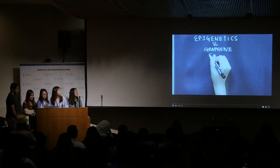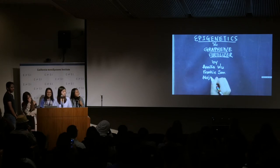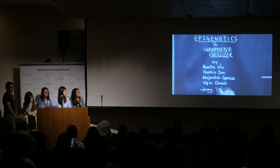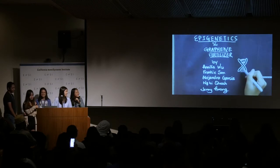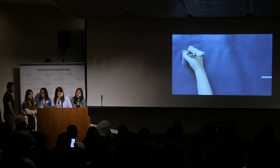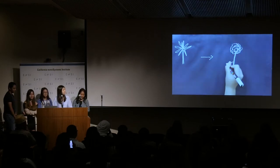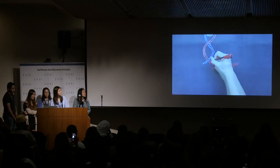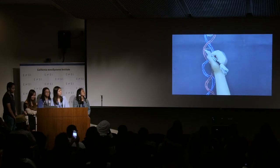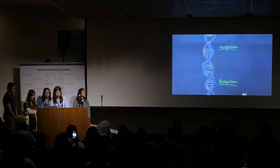Epigenetics and Graphene Fertilizer by Anika Wu, Frankie Sun, Alejandro Garcia, Ni Quach, and Jenny Huang. What is epigenetics? Epigenetics means changing the way an organism looks or behaves without changing the DNA itself. Epigenetics can tell plant cells to read or not read a specific gene. There are two main types of epigenetics: acetylation and methylation.